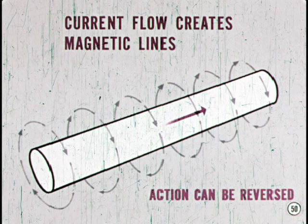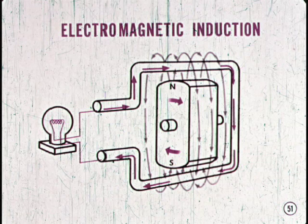We know that current flow through a conductor creates a magnetic field. This action can be reversed by using a magnetic field to generate a voltage and create current flow in a conductor. Let's see how this works. If a permanent magnet is rotated inside a loop of wire, the magnetic lines of force will cut across the conductor. The moving lines of force cause the free electrons in the conductor to start moving. This is electromagnetic induction.